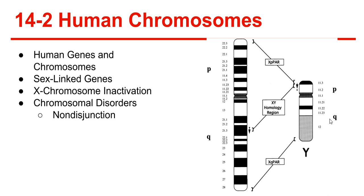Color-blindness is found on the X chromosome. Because males have just one X chromosome, all X-linked alleles are expressed in males, even if they are recessive. For females, they need two recessive sex-linked genes. That means if a male has one recessive allele for color-blindness on the X chromosome, he will express color-blindness. Hemophilia is another genetic sex-linked disorder found on the X chromosome — a protein necessary for blood clotting is missing, and people who have hemophilia can bleed to death from minor cuts.